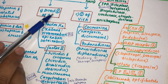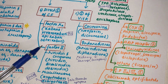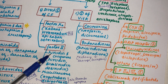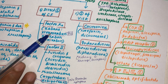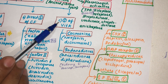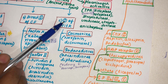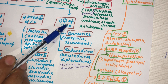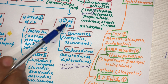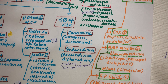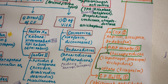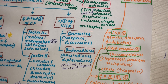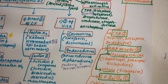That concludes the direct inhibitors of clotting factors, covering hirudin and its congeners in detail. The third group of in vivo anti-coagulants — inhibitors of vitamin K — will be covered in the next video as the current video has become lengthy.